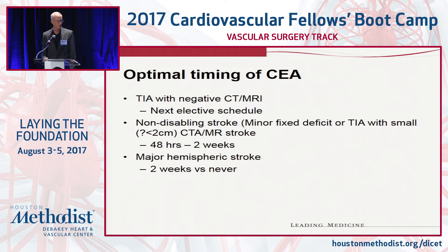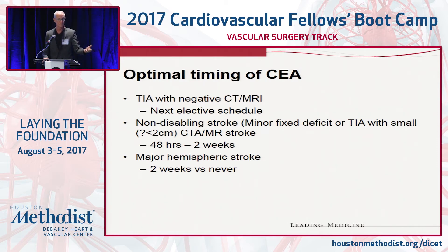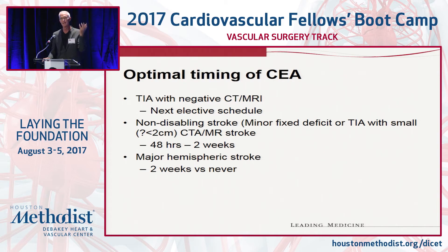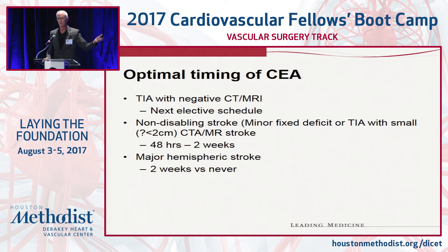Optimal timing — nobody really knows for sure. If somebody came in today with a TIA and a negative CT that doesn't show a massive stroke or a bleed, when would you do his operation? You'd do it as soon as you can reasonably find a place to operate. There's no good reason to delay taking out an embolic source in somebody's carotid artery. If there's vulnerable plaque breaking off and going to the brain, you ought to take him to an operating room.